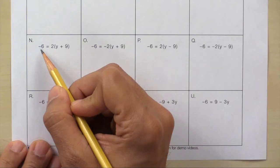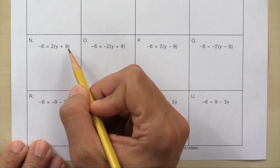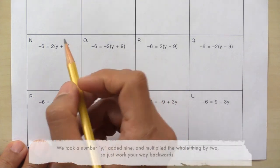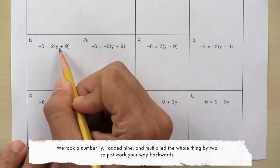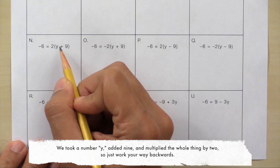One more example, box N. Here we have negative 6 equals 2y plus 9. So we took a number y, added 9, then multiplied this whole thing by 2.